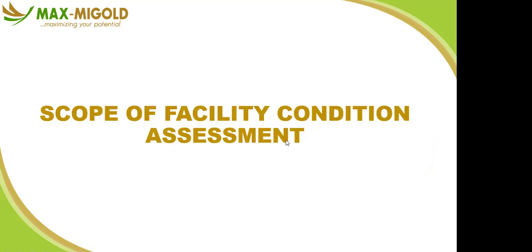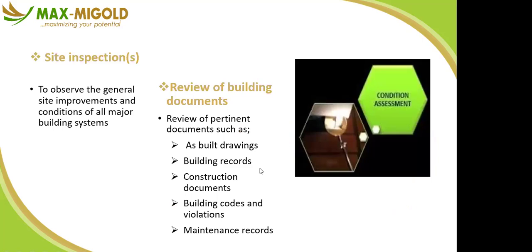What is the scope of carrying out facility condition assessment? When doing inspection, you cannot send software — you must appear physically. You conduct inspection to observe the general site improvements and condition of all major building systems. You also review building documents: building records, construction documents, building codes, and maintenance records. These all help during condition assessment.